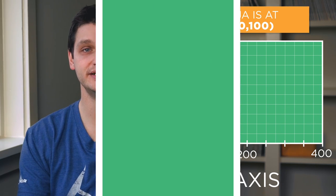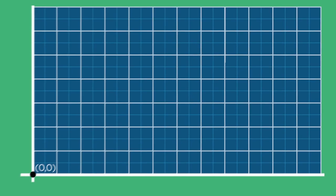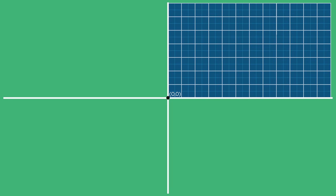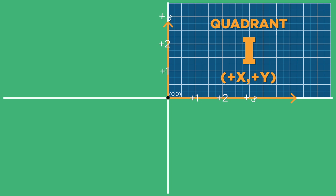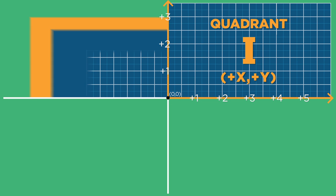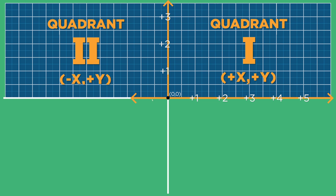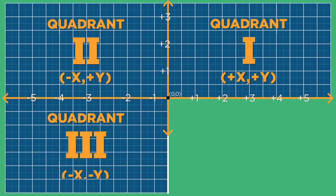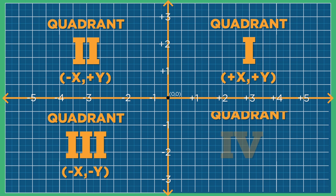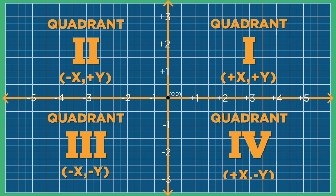What we've created is actually quadrant one of the coordinate plane. If we zoom out, we can see that there are four different quadrants to the plane. Quadrant one, which we're using as our screen, contains the points with positive values for x and y. Moving counterclockwise, we get to quadrant two, which contains all points with a negative x and a positive y. Quadrant three contains all points with negative x and y. Quadrant four contains all points with a positive x and negative y.